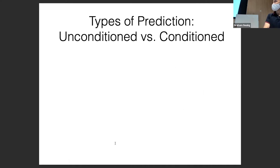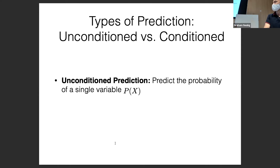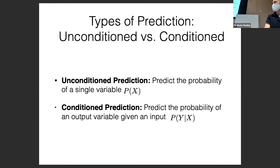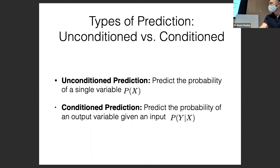There are also two other types: unconditioned versus conditioned prediction. Unconditioned prediction is predicting the probability of a single variable P(X) — things like language modeling. Conditioned prediction is predicting P(Y|X), the probability of an output given an input — like text classification. Unconditioned language modeling is like 'please generate me a sentence' without caring about its specification, while conditioned is 'please generate a sentence that's a translation of this sentence.'